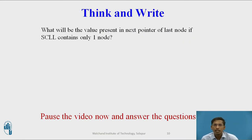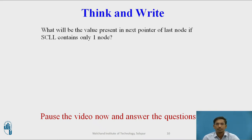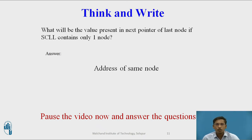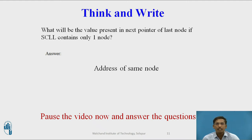You can pause the video and answer: what will be the value present in the next pointer of the last node if a singly circular linked list contains only one node? The answer is: that node's next part will hold the address of itself — the address of the same node.